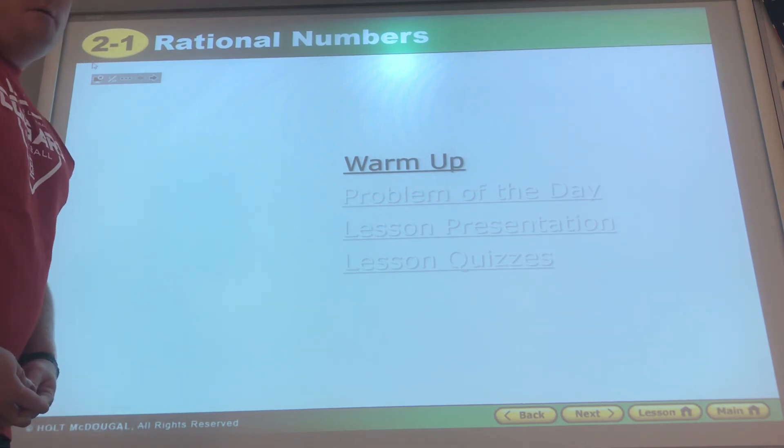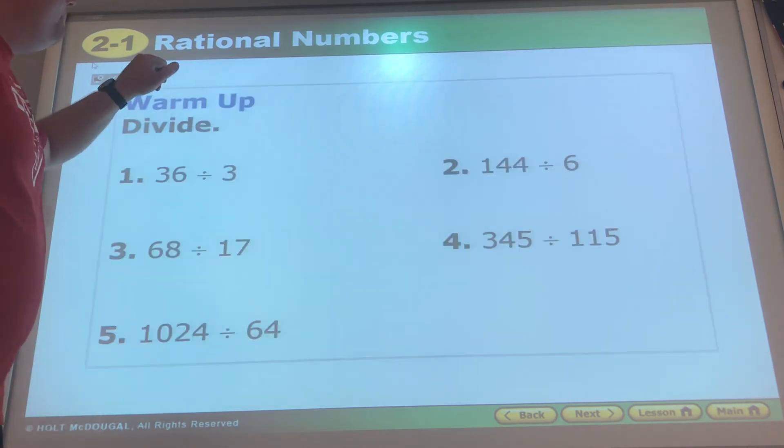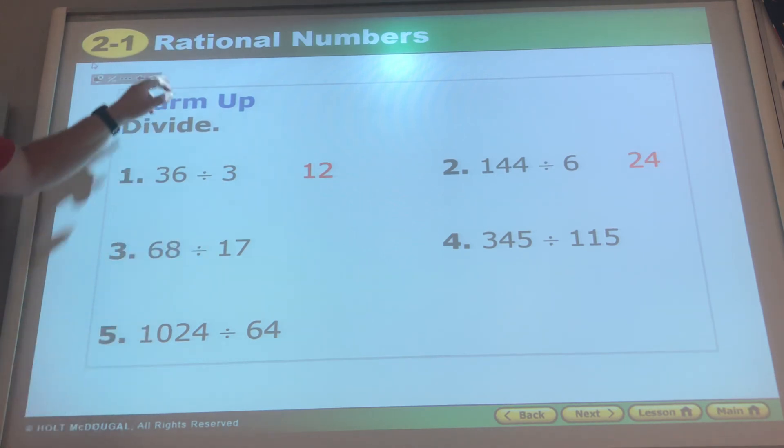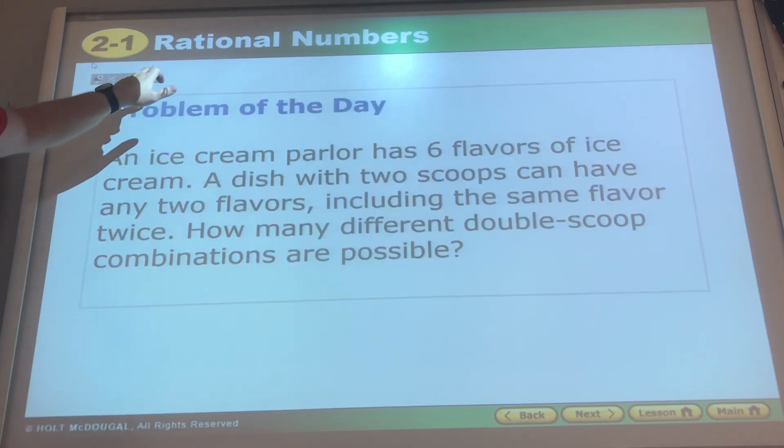Division review: 36 divided by 3 is 12, 144 divided by 6 is 24, 68 divided by 17 is 4, and 16. All right, problem of the day, well done.